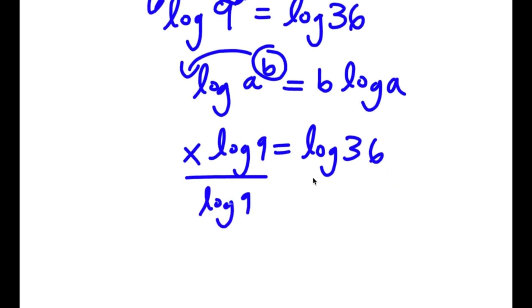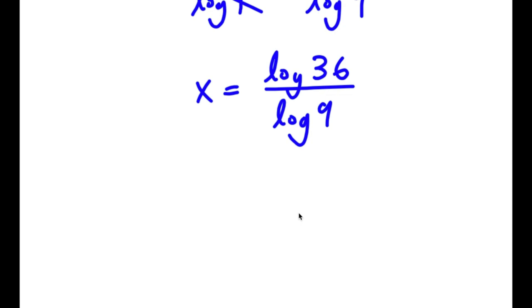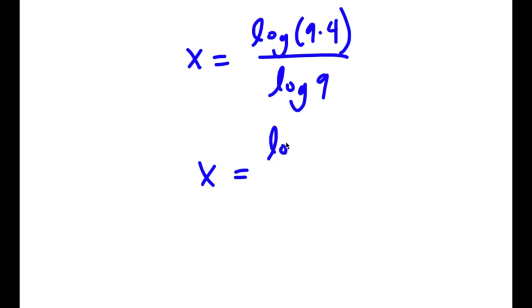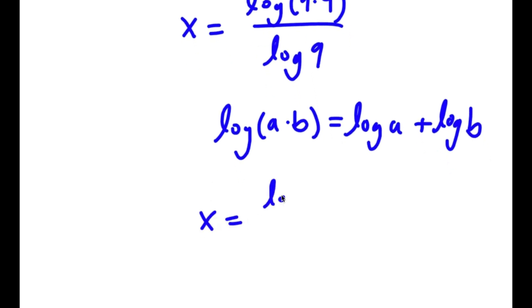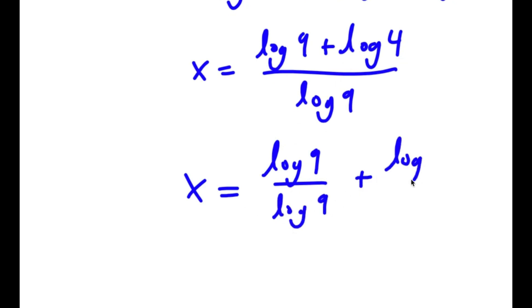If I divide both sides by log 9, these two cancel out and I have x is equal to log 36 over log 9. Now log 36 is the same thing as log of 9 times 4, so I have that over log of 9. If I have something in the form log a times b, this is equal to log a plus log b. So log of 9 times 4 equals log 9 plus log 4. This gives me log 9 over log 9 plus log 4 over log 9.